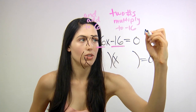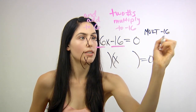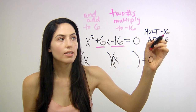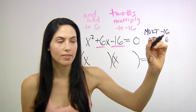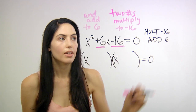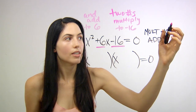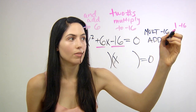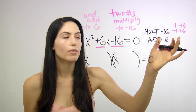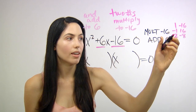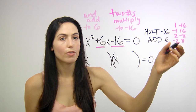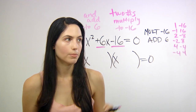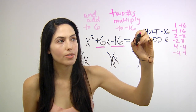We're looking for two numbers that multiply to negative 16 and add to positive 6. First, make a list of all pairs of numbers that multiply to negative 16. We could have 1 and negative 16, or flipped signs: negative 1 and 16. We could have 2 and negative 8, or flip the signs: negative 2 and 8. We could also have 4 and negative 4, or the opposite: negative 4 and 4.